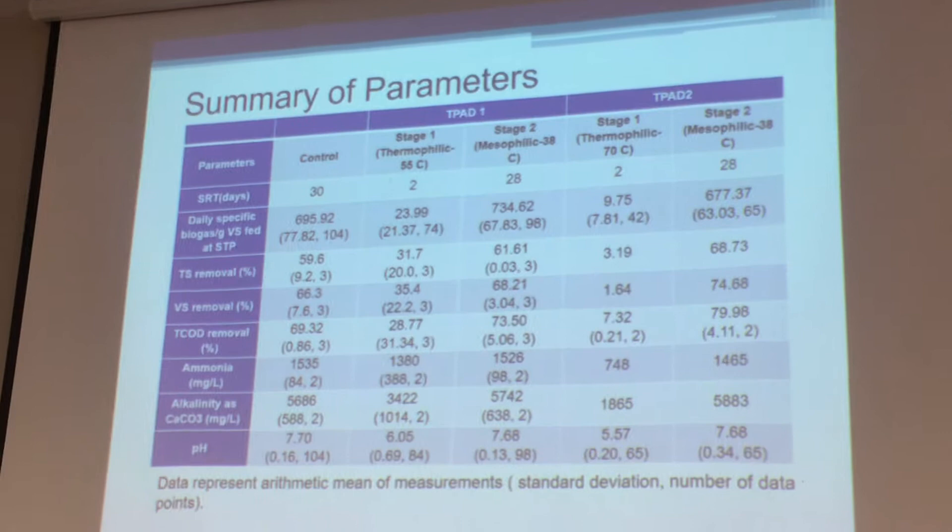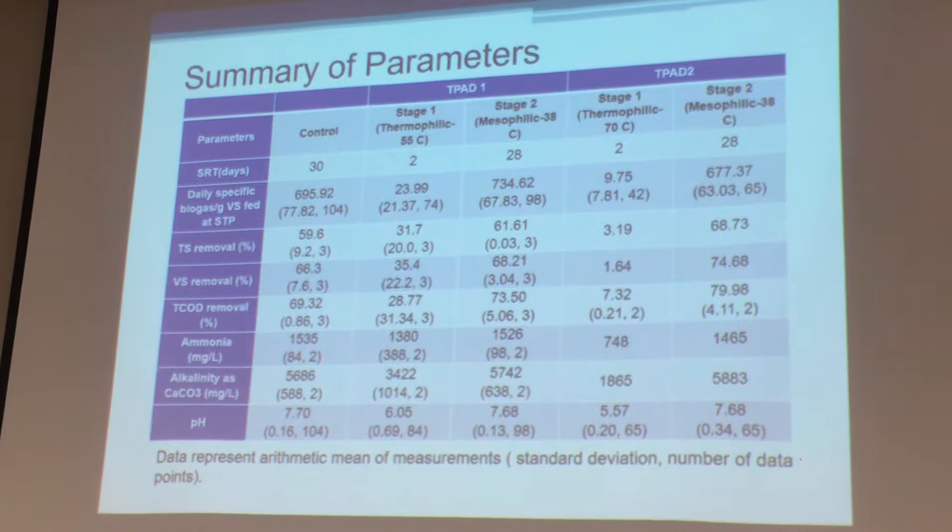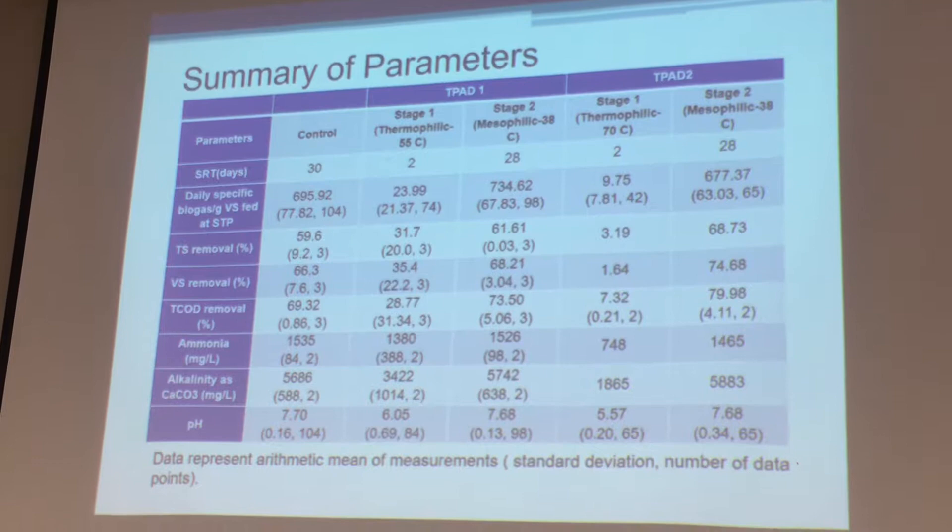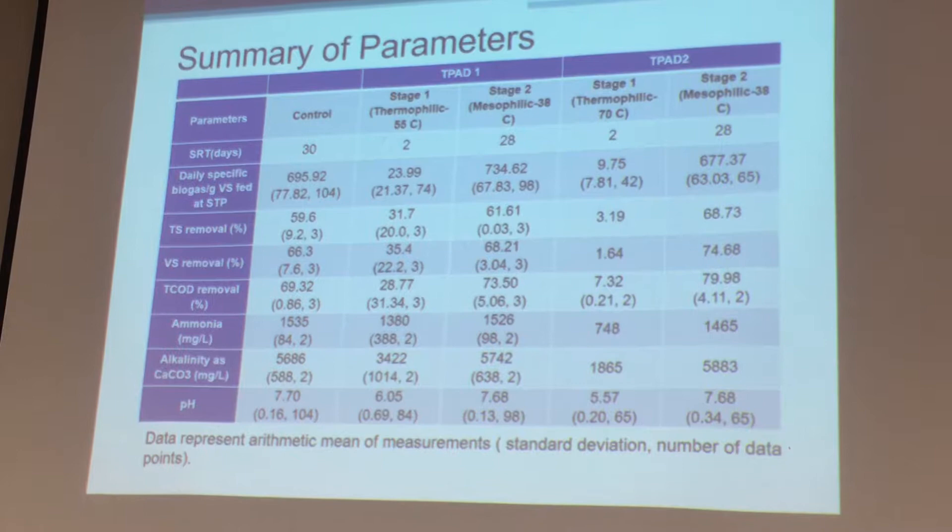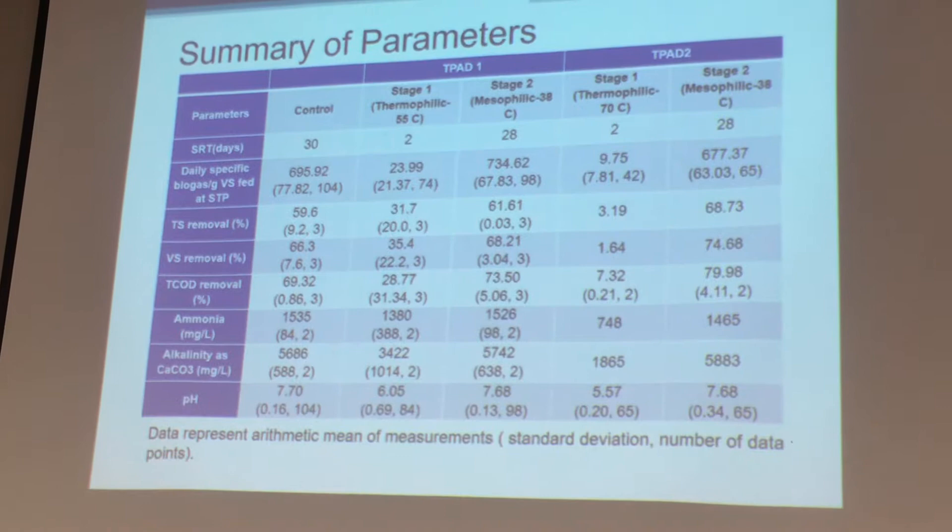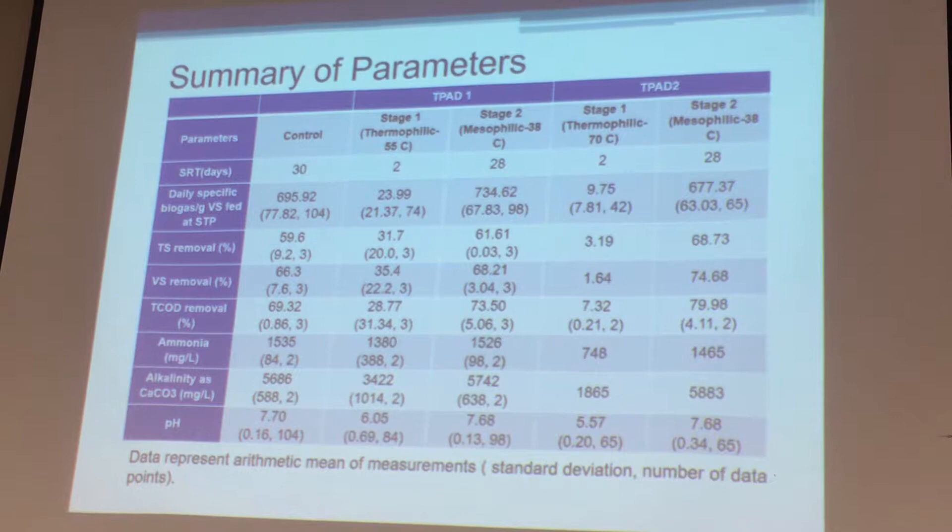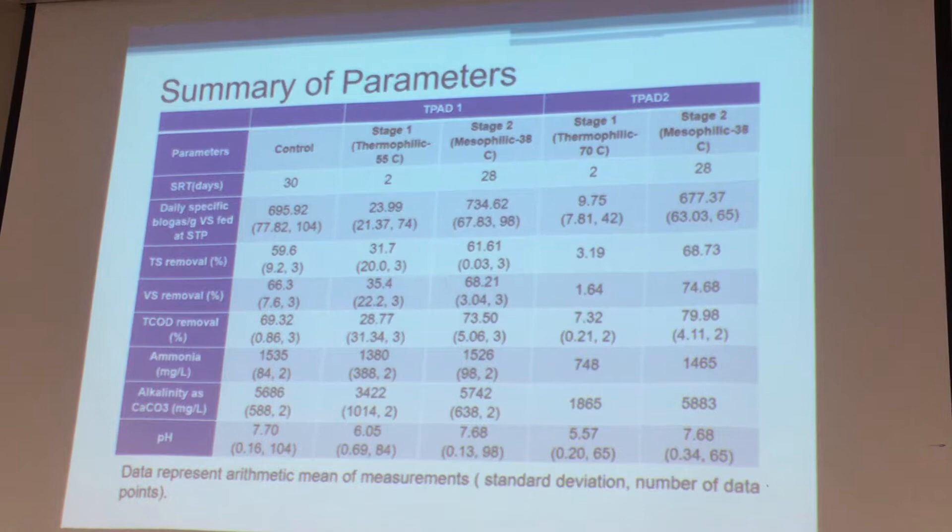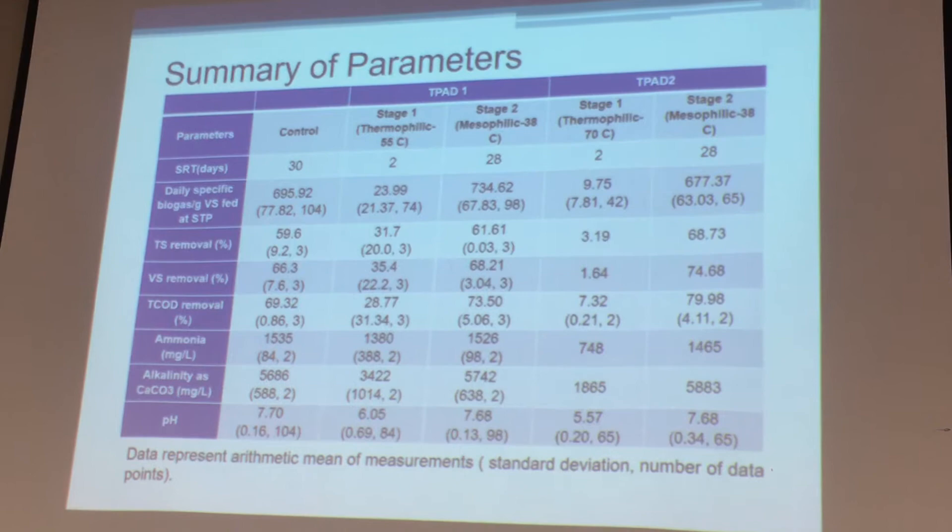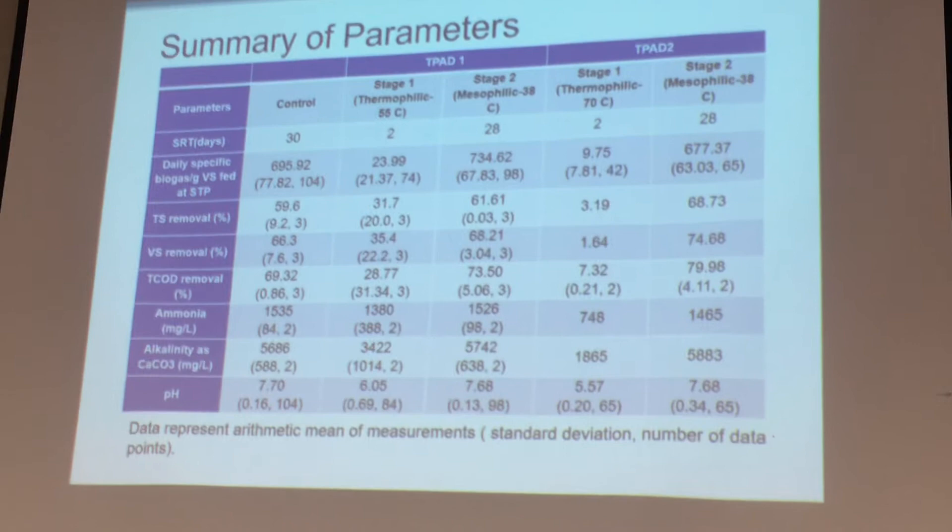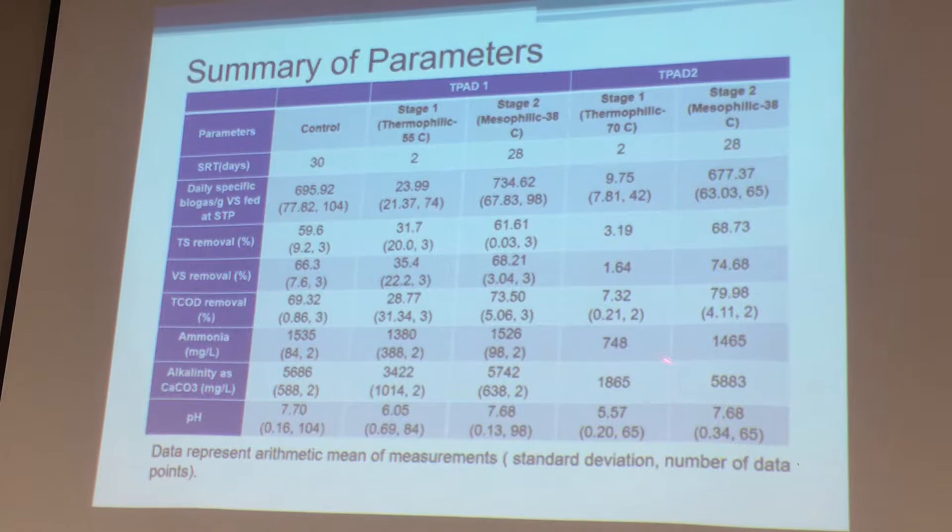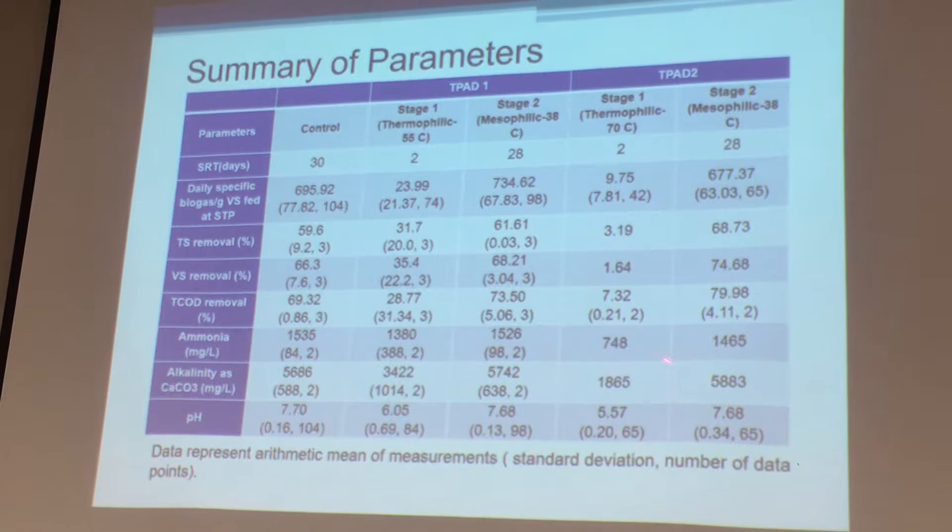In the third row, we have the average values of the daily biogas based on the VS that is fed every day. As you see, we have kind of high values for the second stages of the two T-pads. But for the first stages, I changed the SRT at the beginning. I had around 15 days. I changed it gradually. So that's why I have a bigger value here. But currently, if I consider only the recent data, we will have a similar value to this one. They are not generating much. The first stages have very low biogas production because their purpose is not really biogas production.